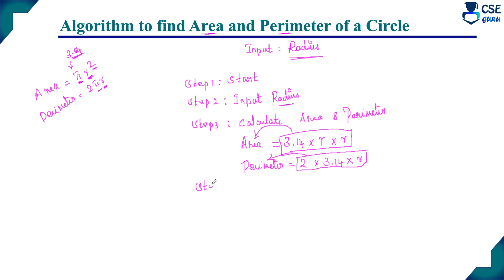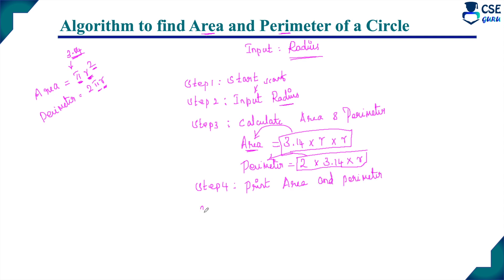Step 4: we have provided the input and processing is done. The next step is to display the output. To display, we use a print statement. So, print area and print perimeter — using the variable names given. The output values of area and perimeter will be displayed on the output screen.